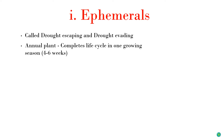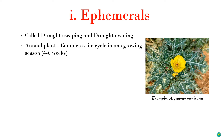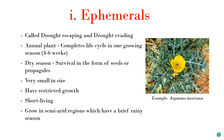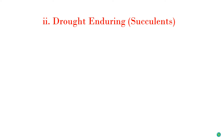During critical dry periods, ephemeral plants survive in the form of seeds or propagules, and when conditions are favorable, the seeds germinate into new small plants. These plants are small in size with restricted growth and require very low amounts of water. Next are succulents or drought-enduring plants: these plants store water in their plant organs like stems, leaves, and roots for use during dry periods.